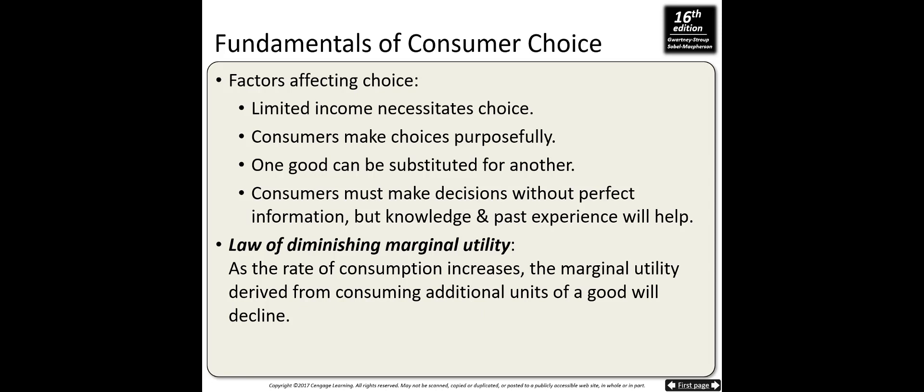Fourth, consumers must make decisions without perfect information, but knowledge and past experience will help. Most of the time, acquiring information is costly, so finding perfect information might not be easy. But we make decisions using knowledge and past experience, and that helps us find the right combination of goods to buy.